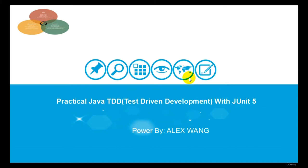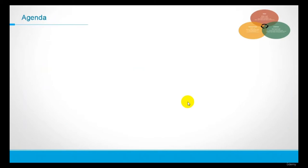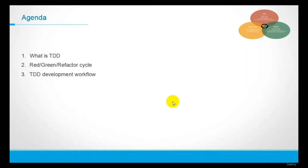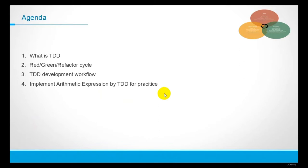Hello everyone. This course is about practical Java TDD — test-driven development with JUnit 5. Let me briefly introduce the course agenda first. I will explain what TDD is, introduce the red-green-refactor cycle, and put details into the TDD development workflow. Finally, I will implement arithmetic expressions by TDD. This course is more of a hands-on tutorial of TDD.